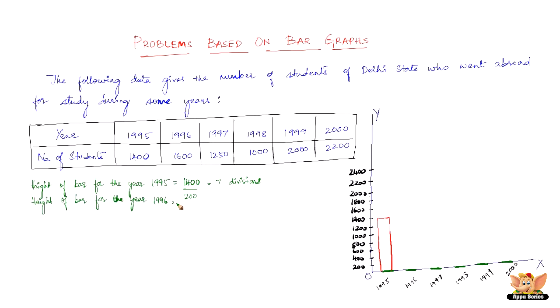Now let us go back to the second bar. Height of the bar for the year 1996 is 1600 by 200 which is 8 divisions. So let us now draw the bar for this.